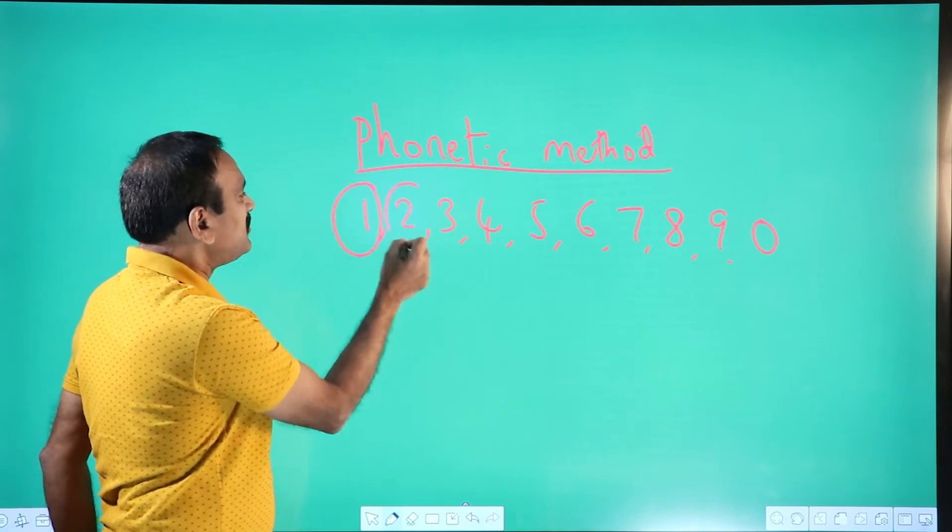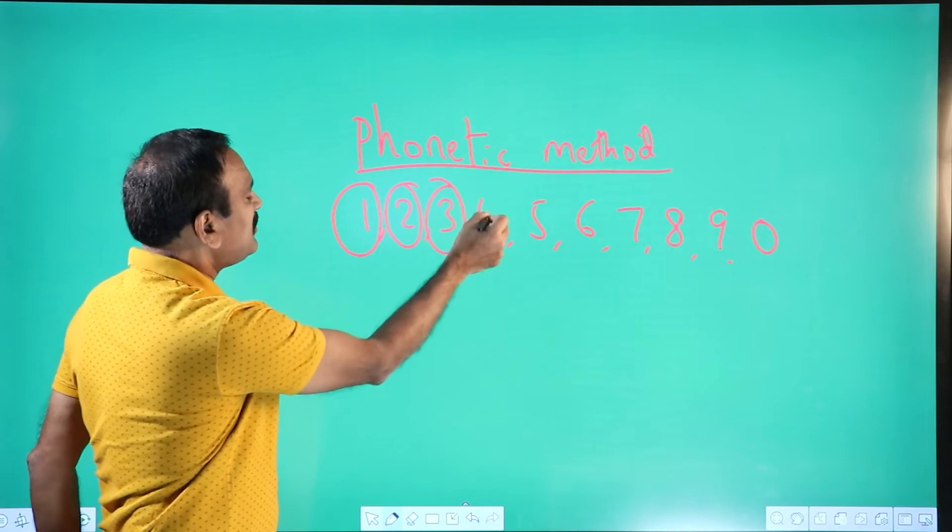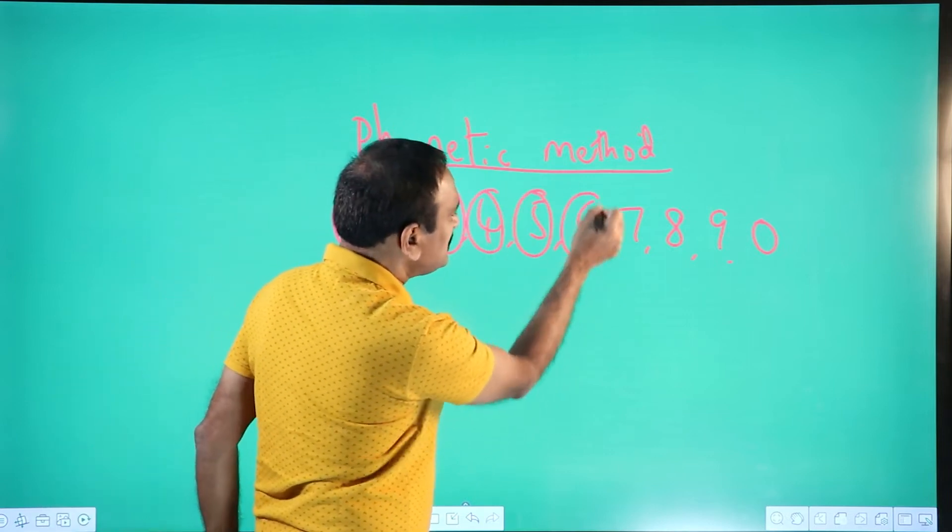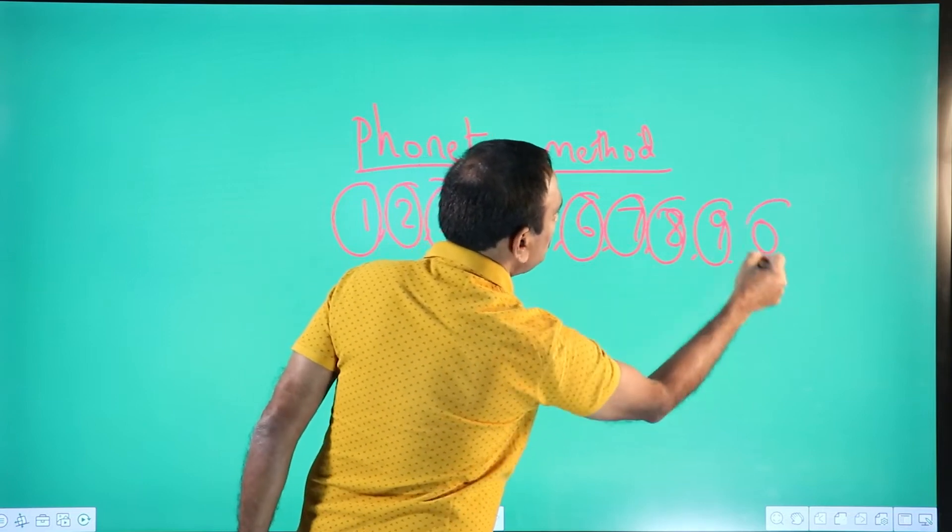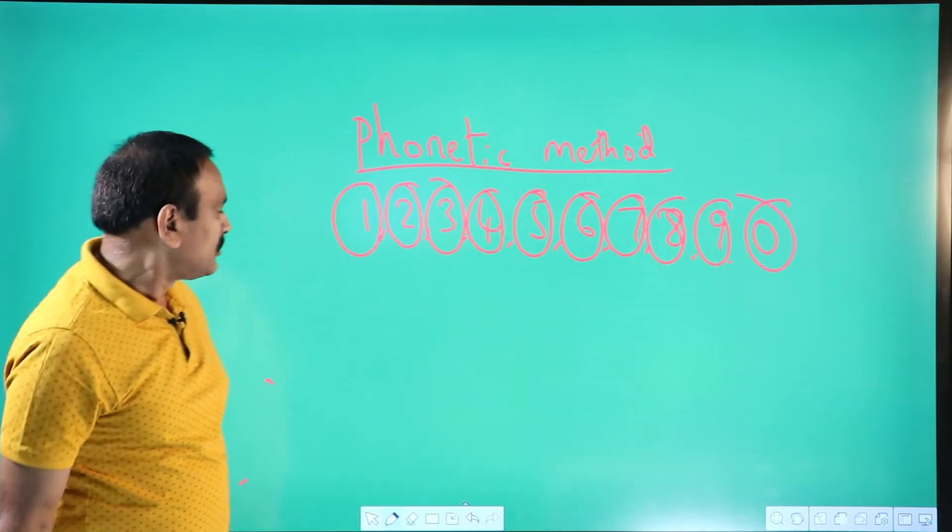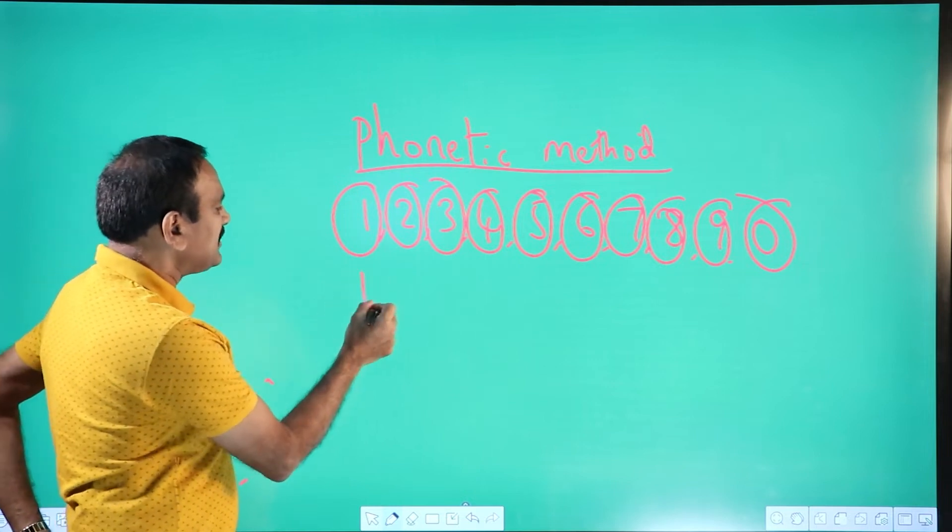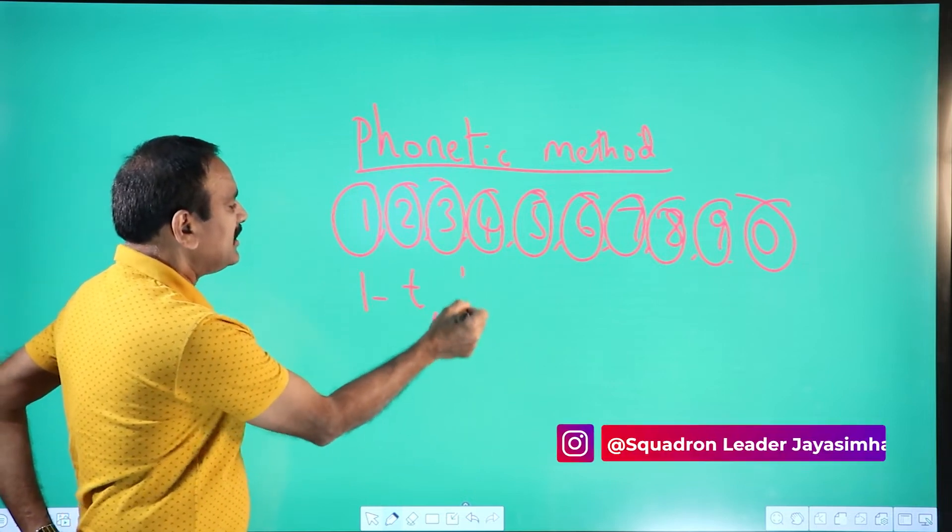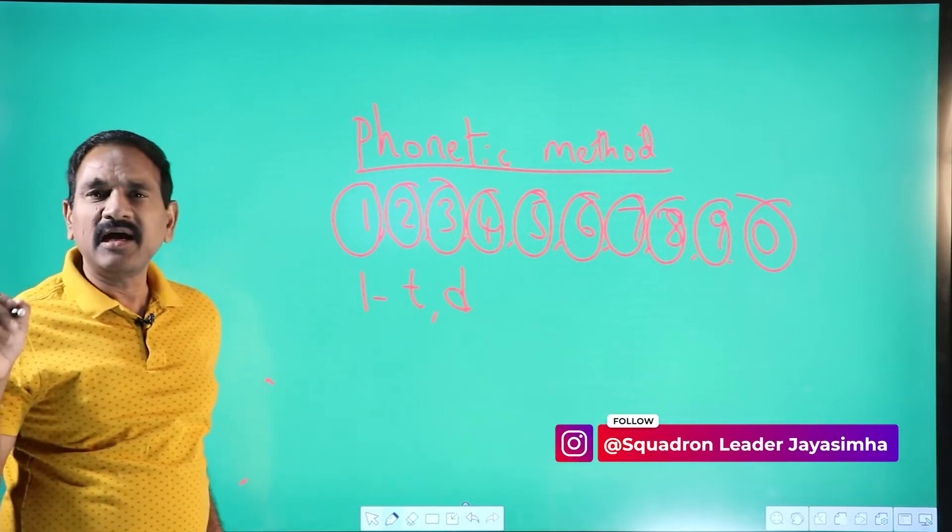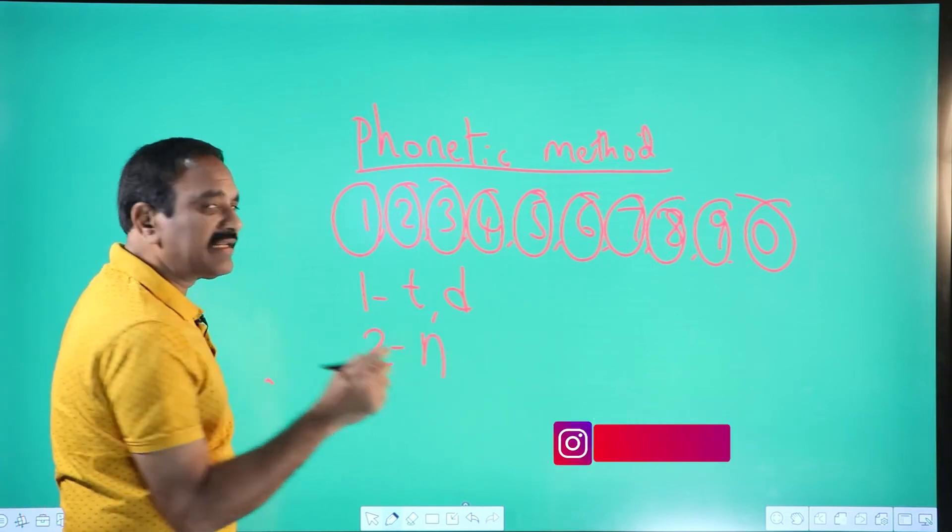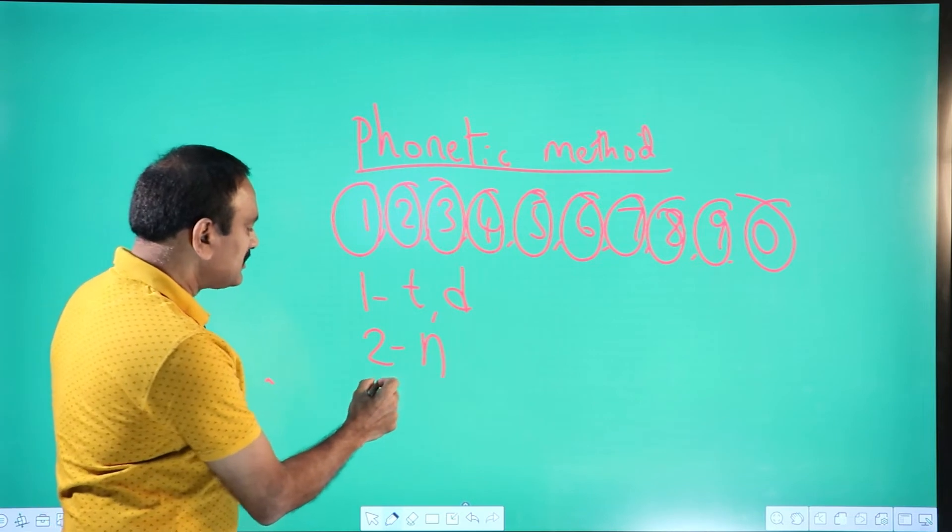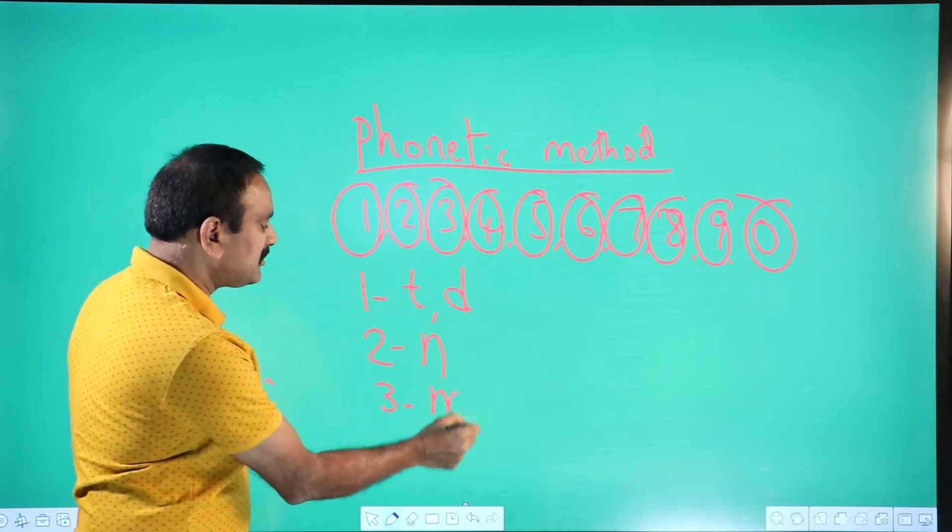1 has got some sound, 2 has got one sound, 3 has got one sound. 1, basically the sound means T or D. Wherever you make the sound TA or DA becomes 1. 2 means N. NA sound becomes 2. 3 means M. MA sound becomes M.